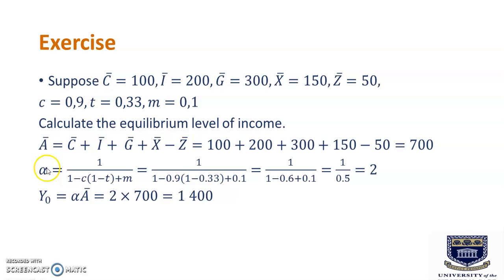Next, we can calculate the multiplier or alpha, and that is given by the multiplier formula, and that is 1 divided by 1 minus C in brackets, 1 minus T close bracket plus M. Now it is very important that you remember your BODMAS. You need to do what is in the brackets first. So once you substitute your values for your MPC which is 0.9, then you substitute your value for your tax rate which is 0.33, and here you substitute plus M which is your marginal propensity to import equal to 0.1.